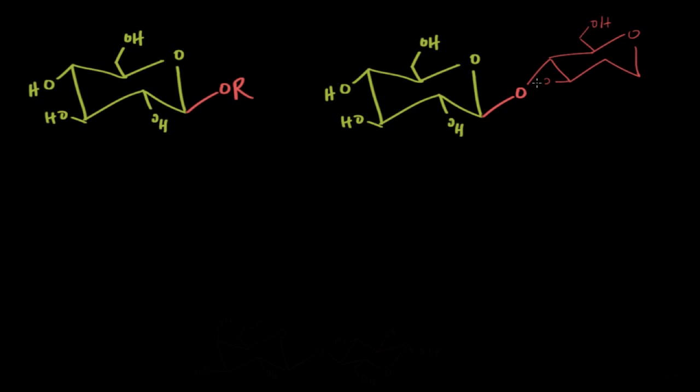They can function really similarly to alcohols in reactions. When this happens, the individual monosaccharides are linked together to make an acetal, and we call this linkage a glycosidic linkage.